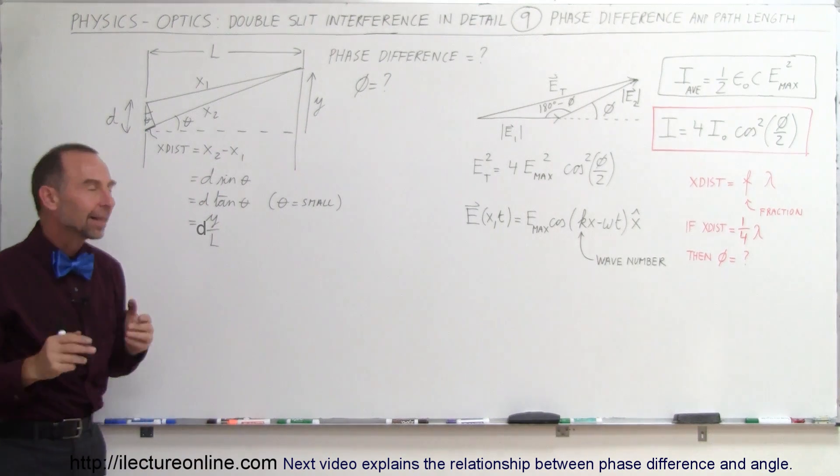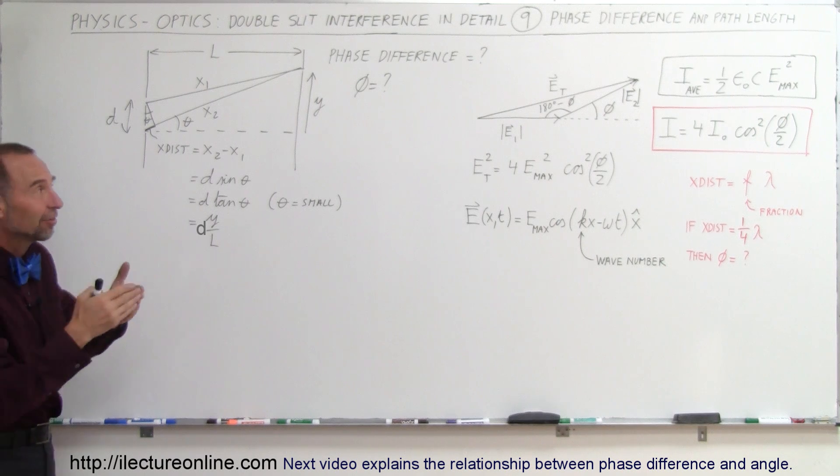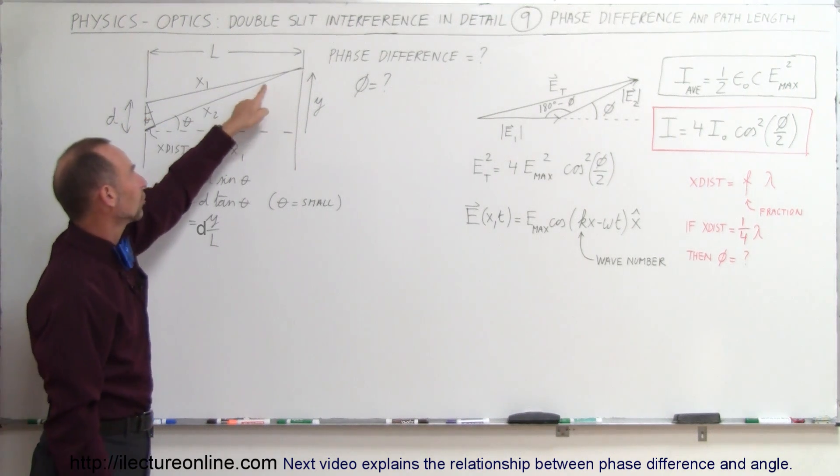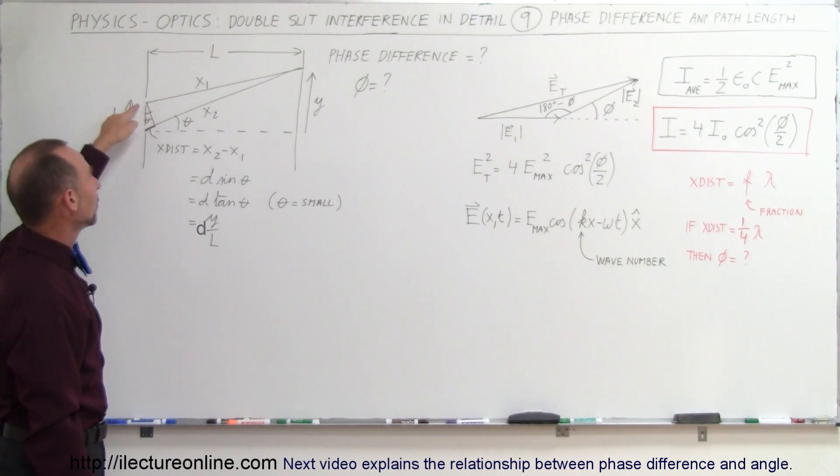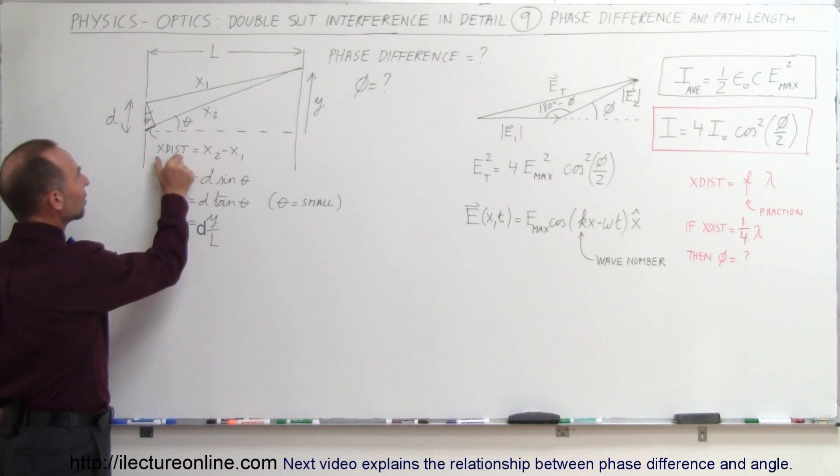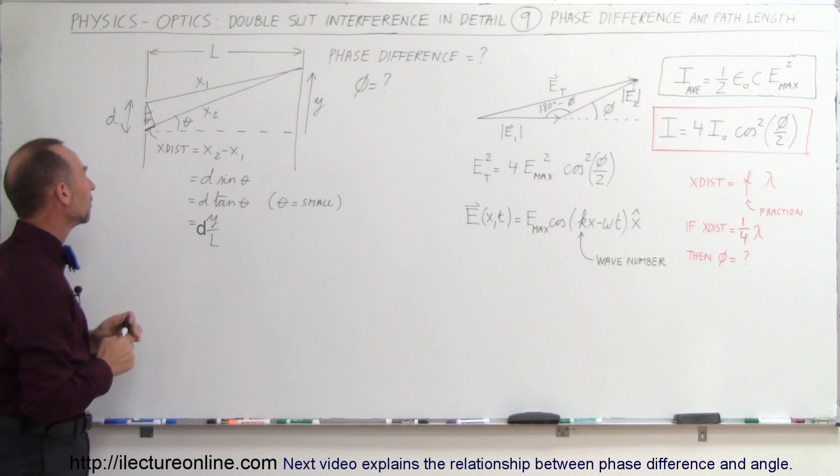The path length difference is the key to understanding what the phase difference is when the two waves come together. The bottom ray has to travel a slightly larger distance x2 compared to the top wave x1, so the difference x2 minus x1 is the extra distance traveled by the second wave compared to the first wave.